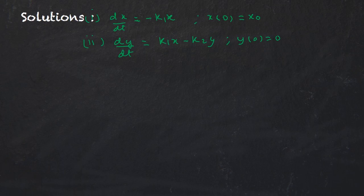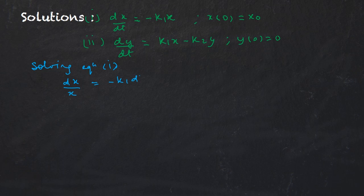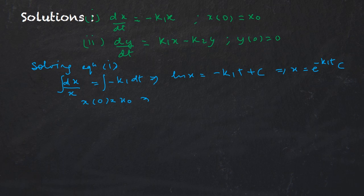Now we solve the first equation. It is variable separable: dx/x = −k1·dt. Integrating both sides gives ln x = −k1·t + C, so x = C·e^(−k1·t). Since x(0) = x₀, we get C = x₀, and our solution is x(t) = x₀·e^(−k1·t).